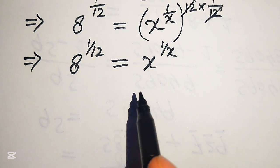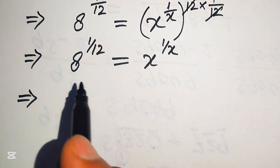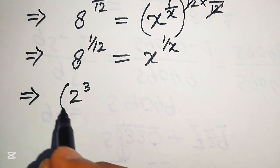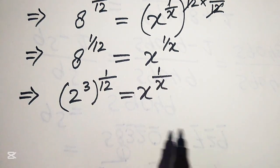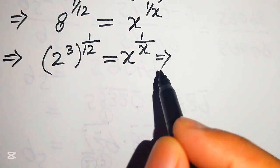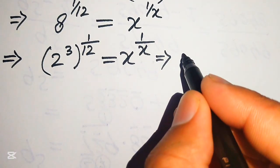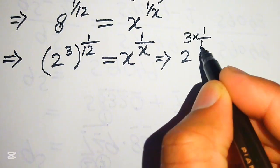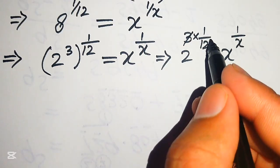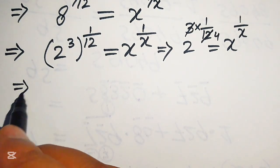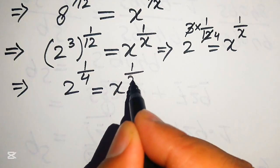For this we write the base 8 in prime factor form. We know the prime factors of 8 are 2 cubed, so we have 2 cubed with whole exponent 1 over 12, equals x to the power of 1 over x. Applying the exponent law, we multiply 3 by 1 over 12. Since 3 over 12 simplifies to 1 over 4, we get 2 to the power of 1 over 4 equals x to the power of 1 over x.